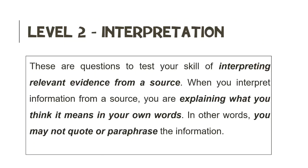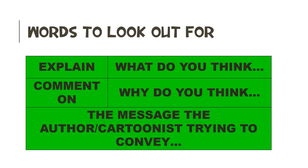Okay, so let's take a look at Level 2 interpretation questions. These are questions that test your skill of interpreting relevant evidence from a source. Interpretation is when you explain what you think the evidence means and write it down in your own words. So ultimately, when you get a Level 2 interpretation question, you are never allowed to quote or paraphrase your answer. To identify a Level 2 interpretation question, we need to look for the following words: explain, comment, what do you think, why do you think, and the message the author is trying to convey. When we see these words in a question, we know we are dealing with a Level 2 interpretation question and we need to interpret the evidence.